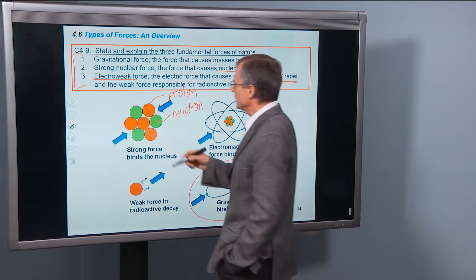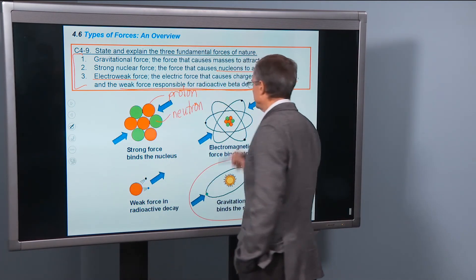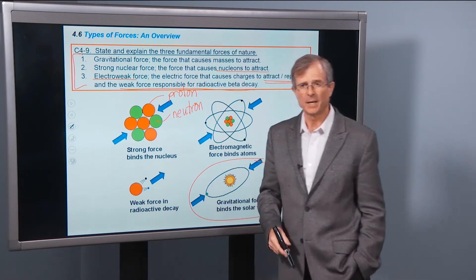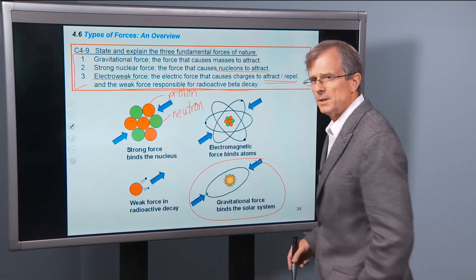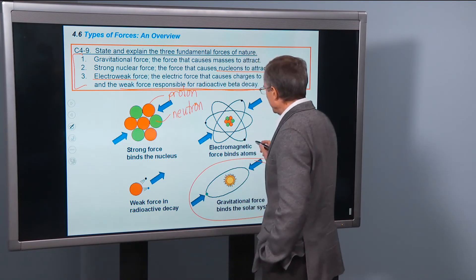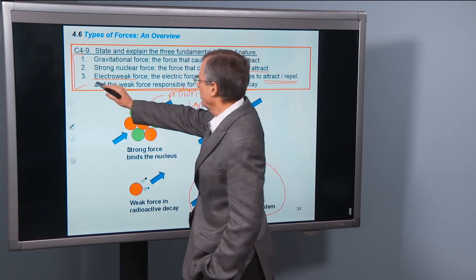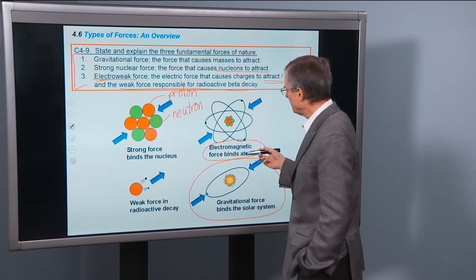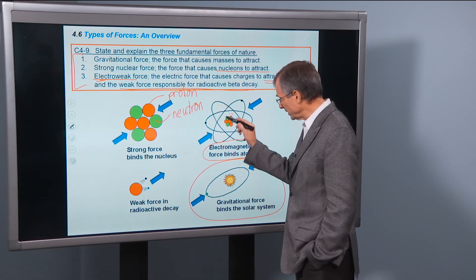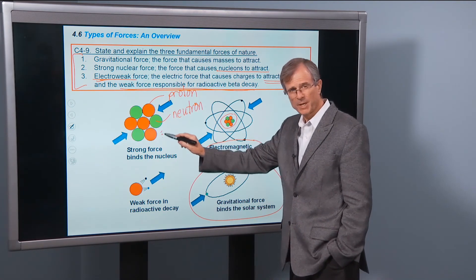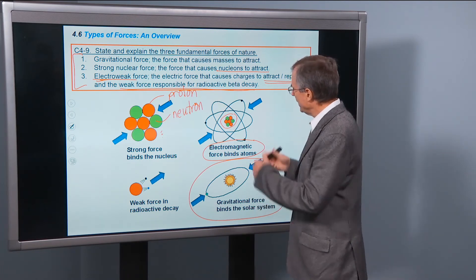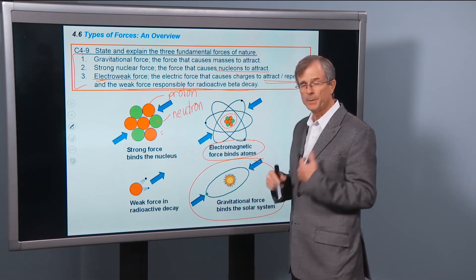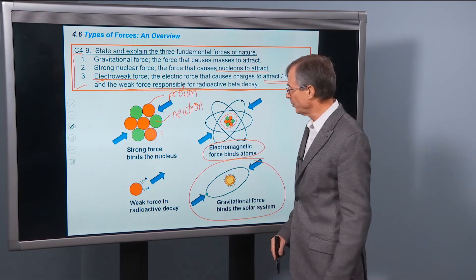The repulsion of those two forces is called the electromagnetic force, or the electric force. And the weak force, which is responsible for radioactive beta decay. We'll talk more about that in the second semester. So the electromagnetic force, that's the electro part of the electroweak force, that binds atoms together. Not the nucleus, because that's a strong force that binds the nucleus together. But atoms together, atoms are bound by the electromagnetic force.